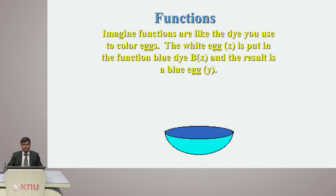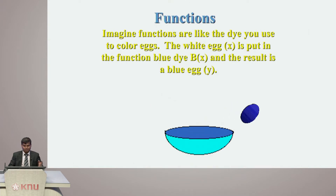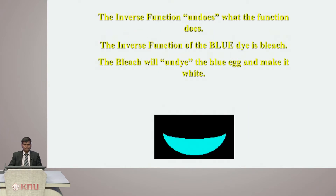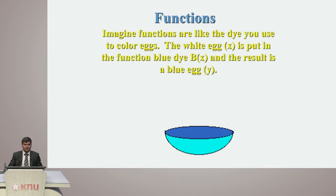Before that, I want to just redefine these terms. Just imagine a function is like a dye you use to color eggs. A white egg is the input — you have an egg given as an input. The function 'blue' actually dyes it and gives you the result as a blue egg.